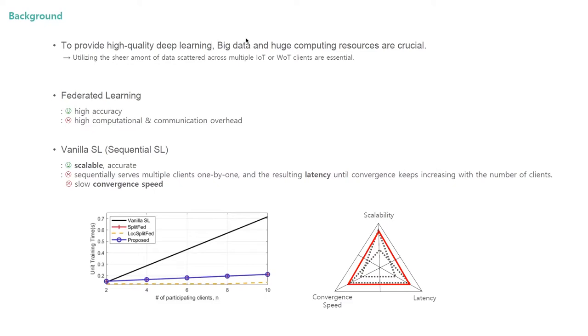In FL, each client trains a local model through their own data and the server averages these local models and sends them back to the clients. Through this process, FL can reflect the characteristics of each client's data without direct data exchange that induces privacy leakage. However, FL has limitations in excessive communication and computation load on the client side.